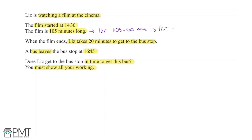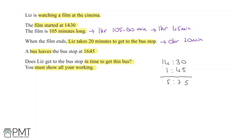The film is 1 hour 45 minutes long, and it takes Liz 20 minutes to get to the bus stop — that's 0 hours and 20 minutes. Starting from 14:30, we add 1 hour 45 minutes. Calculating in time format, 14:30 plus 1:45 requires converting the result from 15:75, which is not a valid time, into 16:15.